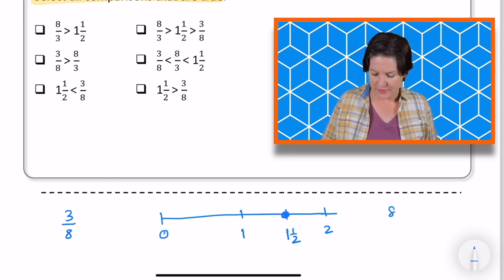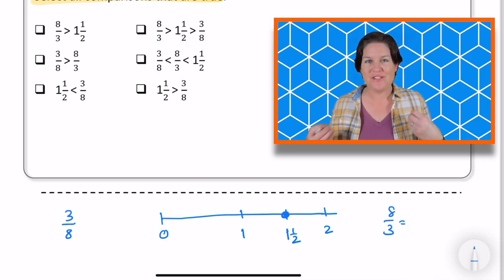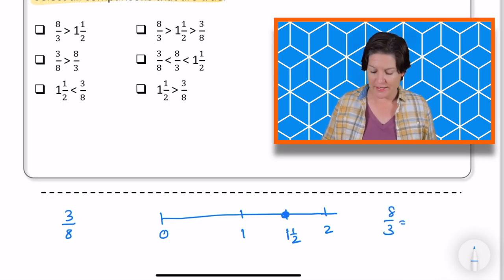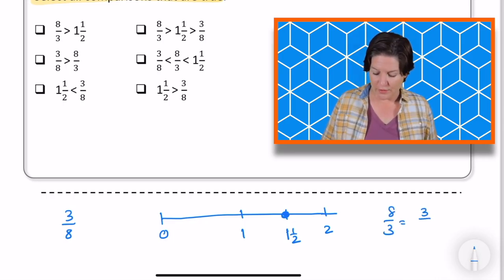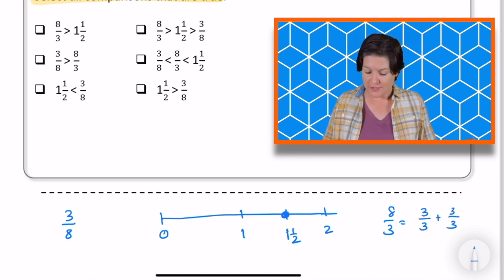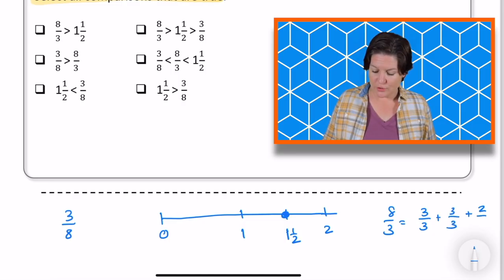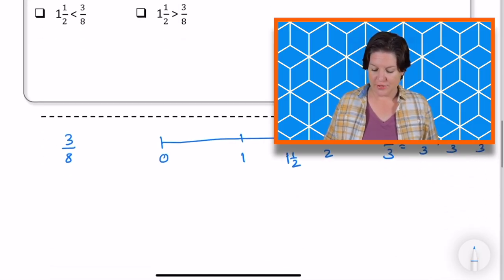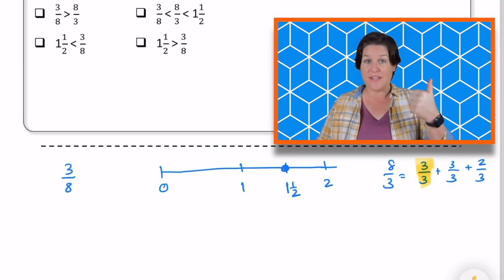And then 8 3rds. Let me decompose that fraction to see how many holes I can get out of it. So I can get 1 hole, that would be 3 3rds. 3 3rds plus 3 3rds is 6 3rds. Then I add on 2 more 3rds to get 8 3rds.